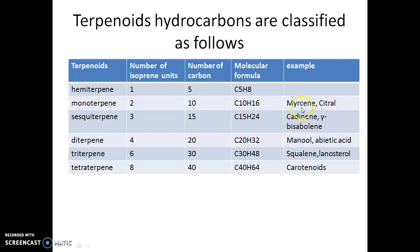Examples of monoterpenes are myrcene and citral. Depending upon the carbon chain, they may be acyclic, monocyclic, or bicyclic types. Sesquiterpenes — where 'sesqui' means one and a half — consist of three isoprene units. The carbon number is 15 and the molecular formula is C15H24.